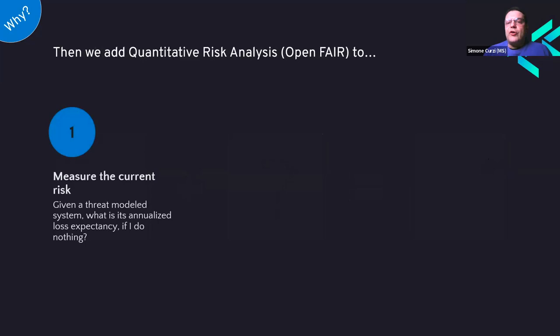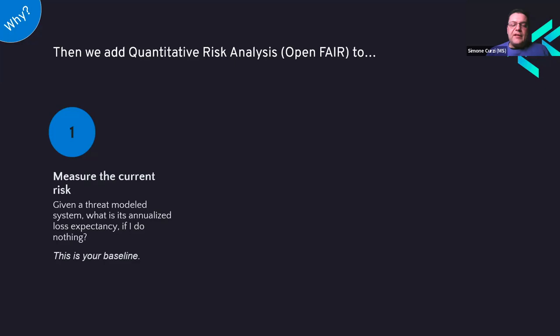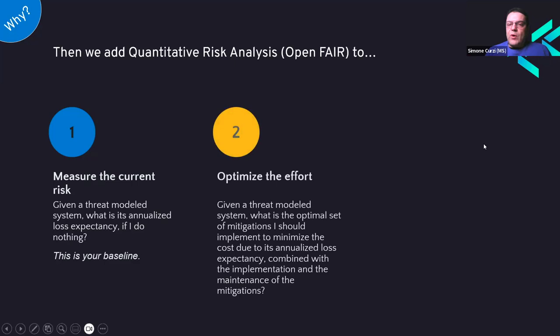When we found OpenFAIR, we tried to cover three important needs. The first is measurability — the ability to measure current risk. We've seen that heat maps have significant shortcomings, but what if we could measure loss in monetary terms? Given a system, generate the threat model, analyze it using OpenFAIR, and this represents a baseline — a reference point for the other scenarios as well.